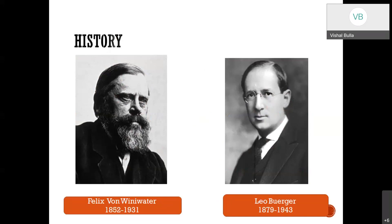In fact, it was the first published case of critical limb ischemia. Years after, in 1908, Leo Buerger, an Austrian-American pathologist, urologist, and surgeon, after developing his surgical skills in Germany in 1906, found an unusual form of progressive vaso-occlusion in Polish and Russian immigrants. Based on his findings, he published a monograph of approximately 500 patients in 1924 and coined the term Thromboangiitis Obliterans.